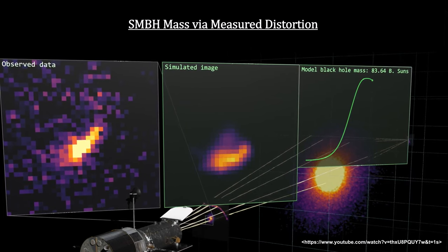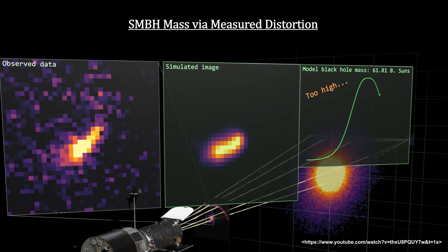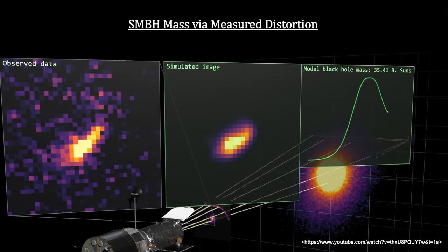Masses too low or too high would not create the image observed, but the correct mass would.